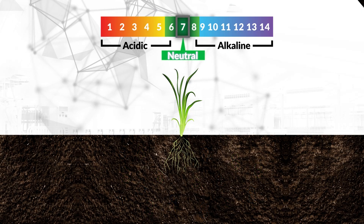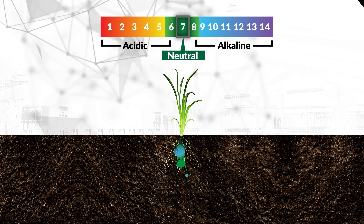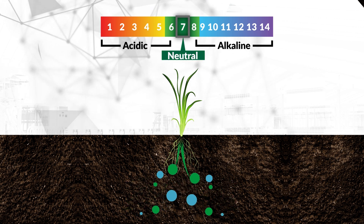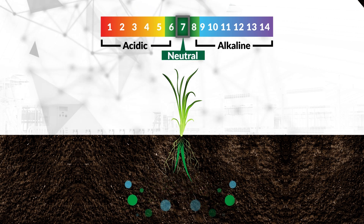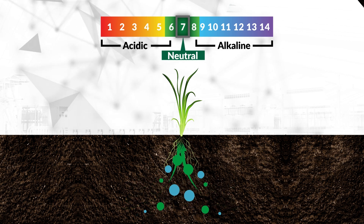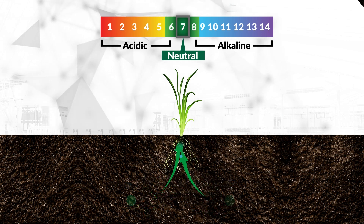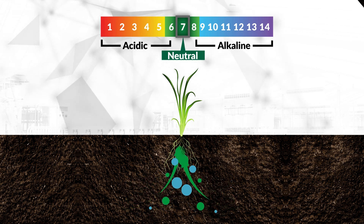To get the most out of your fertilizer investment and assure a healthy looking lawn, balancing your pH is key. A neutral soil pH unlocks the nutrients in your soil, making them more easily absorbed by your turf.